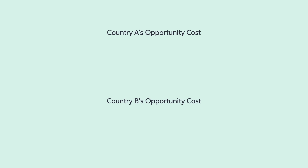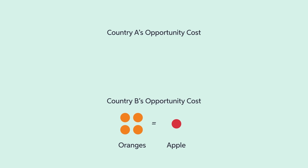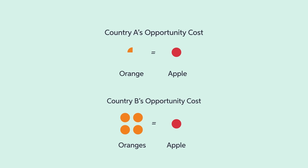It is the opposite for apples. The opportunity cost of producing one apple in Country B is four oranges, while in Country A, it is a fourth of an orange. Country A has a comparative advantage in growing apples.